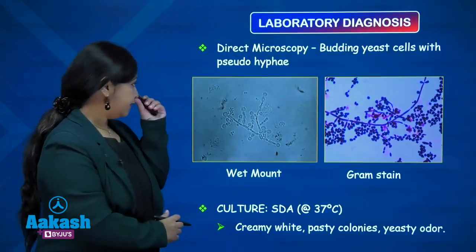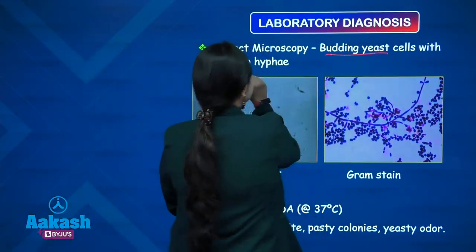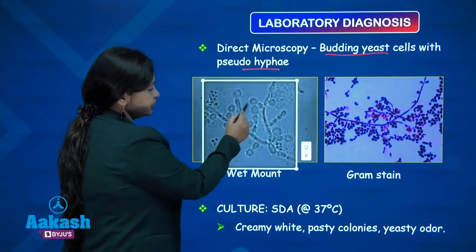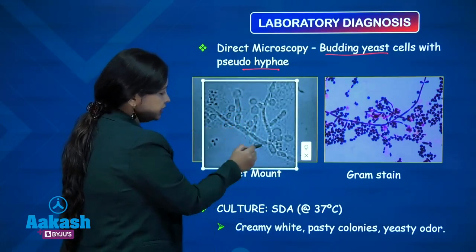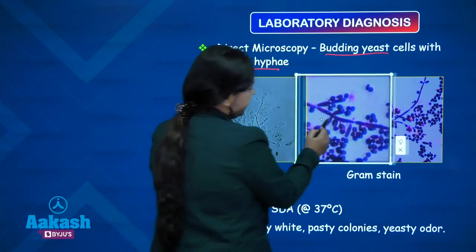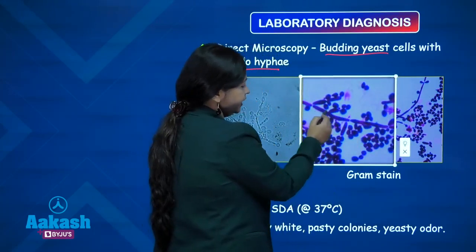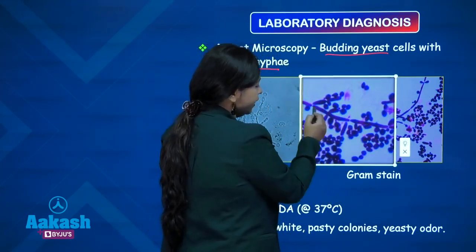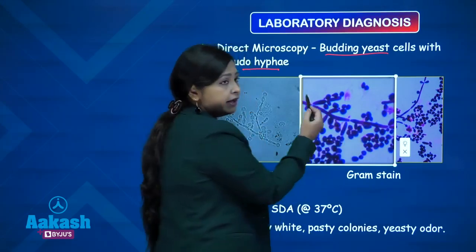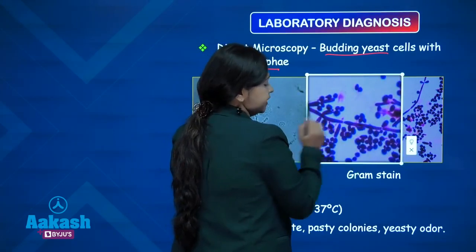Coming to the laboratory diagnosis, direct microscopic examination shows budding yeast cells with pseudohyphae. In the image you can see circular structures which are the budding yeast cells and elongated structures which are the pseudohyphae seen in Candida infections. This is a Gram stain showing the yeast cells and the pseudohyphae, which have constrictions at the ends. They are not actual hyphae — they are pseudohyphae because they do not have parallel sides and parallel septations.